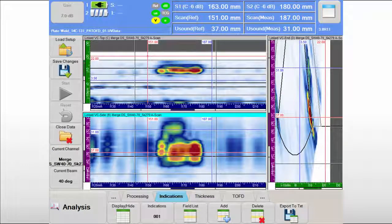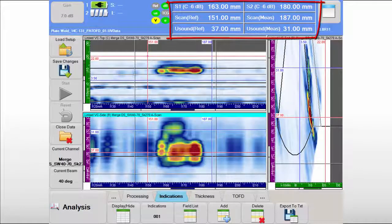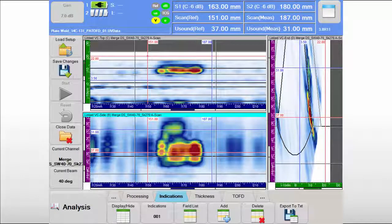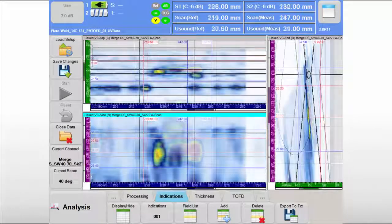For the toe crack, length sizing is performed with the same technique. In this case, the phased array data also provides valuable information about the crack depth. By adequately positioning the cursors on the indication in the ultrasound axis, the height of the crack is estimated at 6 mm using the tip and corner signals.